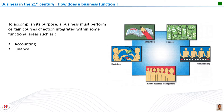The finance function is responsible for obtaining money needed by the business and for planning the use of that money. Money for a business comes from the sale of goods and services, from investments, and from banks and other institutions that loan money. Once money is obtained, it can be used for day-to-day operations or invested for future use. The finance function plans what money is needed, determines the best way to obtain it, and decides how it should be used. Financial service companies such as banks have extensive finance functions, while retail stores may have comparatively small finance functions.